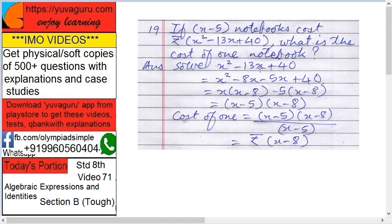Solve x squared minus 13x plus 40. Why do we solve this? Because we want x minus 5 as one of the factors.